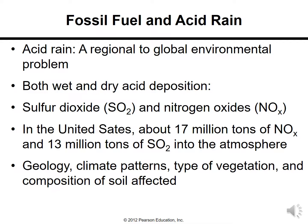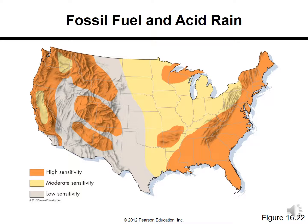Acid rain is a regional or global environmental problem involving both wet and dry acid deposition, such as sulfur dioxide and nitrogen oxides. These become sulfuric and nitric acids when mixed with water, causing damage to geology, changes in climatic patterns, types of vegetation, and soil composition. A chart shows highly sensitive and low sensitive areas for acid rain in the United States.